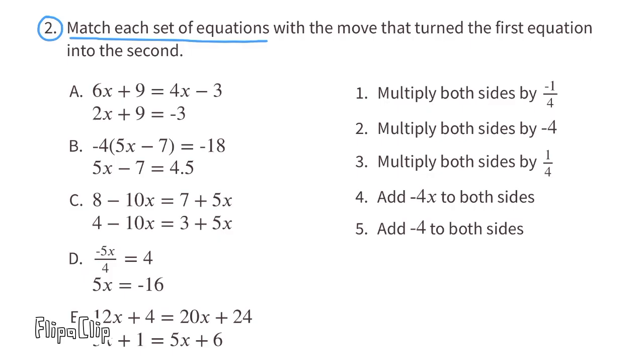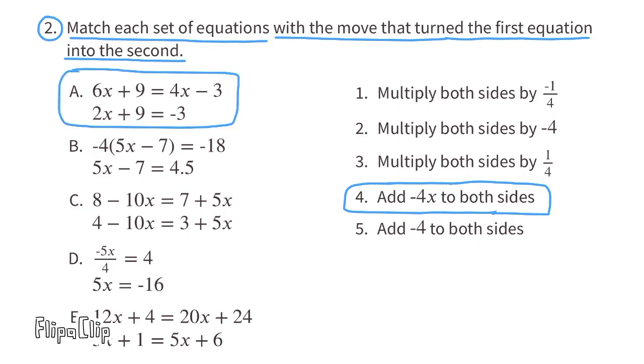Problem number 2. Match each set of equations with the move that turned the first equation into the second. Equation A started with a 6x and ended up with a 2x. And on the right side of the equation, it started with a 4x minus 3 and ended up with only a minus 3. So it looks like they subtracted 4x from both sides, which is the same thing as adding a negative 4x to both sides. Equations A match the number 4 moves.